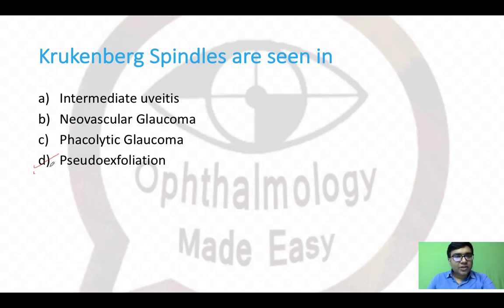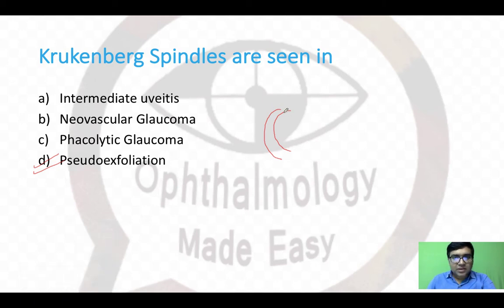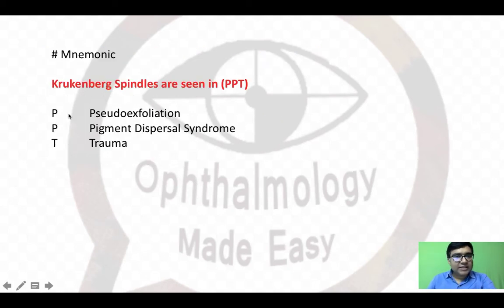The next question: Krukenberg spindles are seen in which condition? Krukenberg spindles are pigment depositions in the form of lines seen on the corneal endothelium. The mnemonic is PPT — Pseudo-exfoliation, Pigment dispersion syndrome, and Trauma.